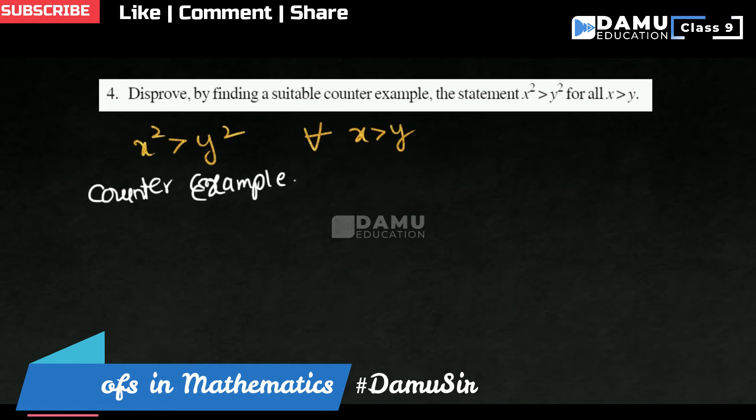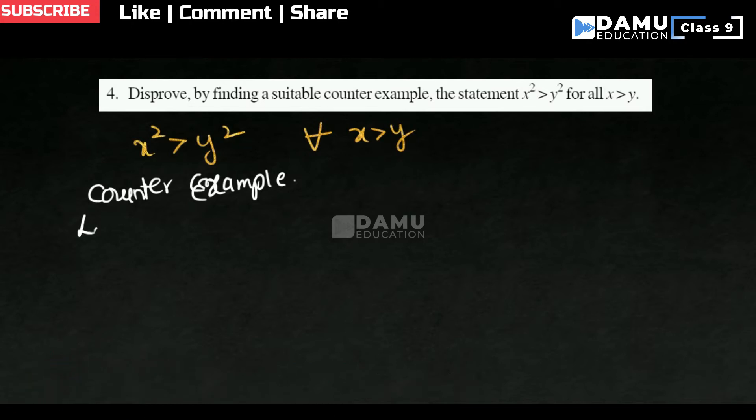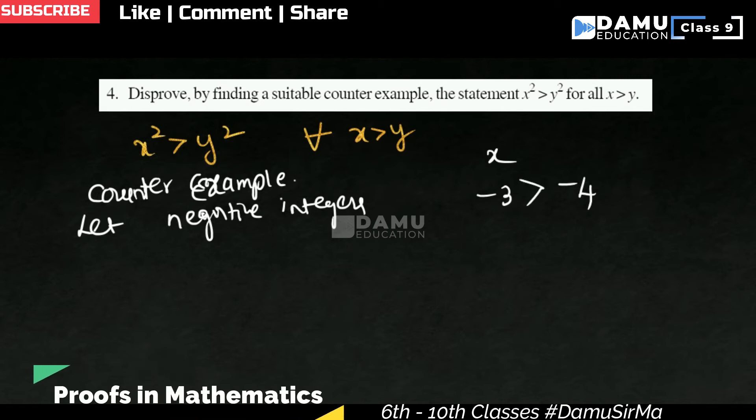So x greater than y. Let's take negative integers, the x and y values. Here let's take negative 3 and negative 4. So negative 3 is greater than negative 4. This is x and y.